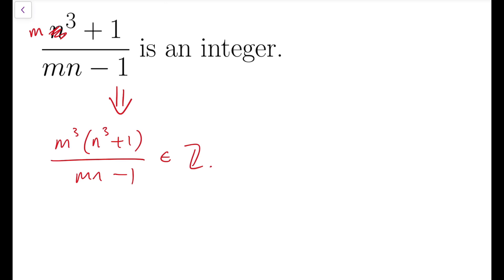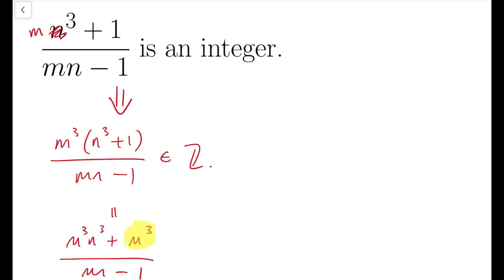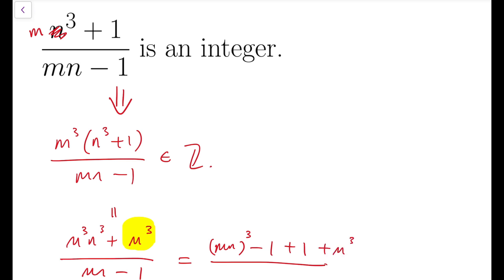There are two reasons I chose to multiply m cubed. The first reason is that after expanding, we will have m cubed n cubed plus m cubed divided by mn minus 1, which helps us investigate whether m cubed plus 1 over the same denominator is an integer. The second reason is that I can rewrite m cubed n cubed as mn whole cubed, and then add minus 1 plus 1 in between.